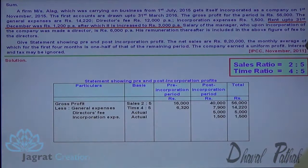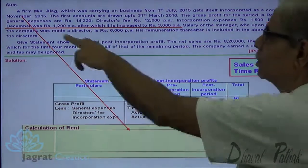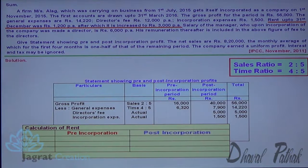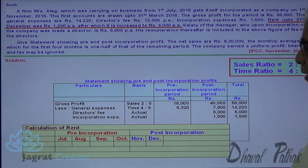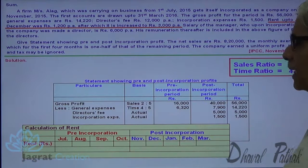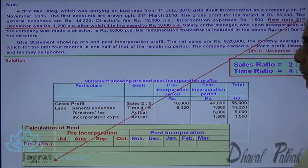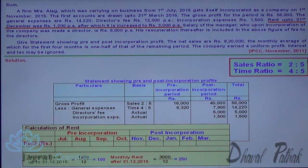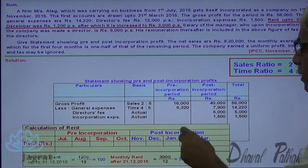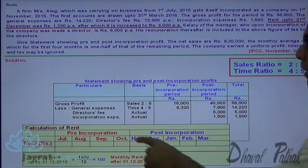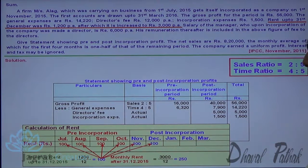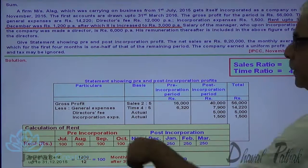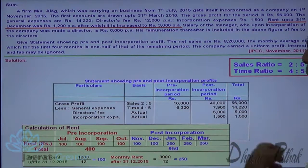For rent, the pre incorporation months are July, August, September, October, and post incorporation months are November through March. Rent up to 31st December is 1,200 per annum, which is 100 per month. After 31st December, rent increases to 3,000 per annum, which is 250 per month. Pre incorporation rent: 4 months × 100 = 400. Post incorporation rent: November and December at 100 per month (200) plus January, February, March at 250 per month (750) = 950 total. So rent is bifurcated as 400 pre incorporation and 950 post incorporation.